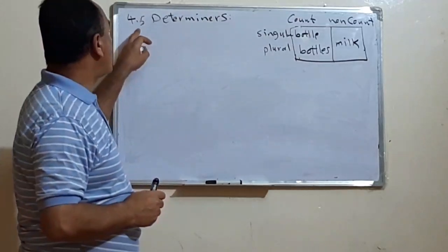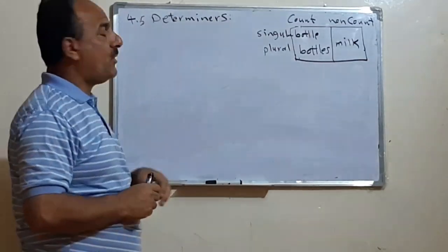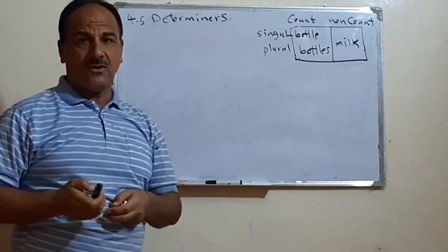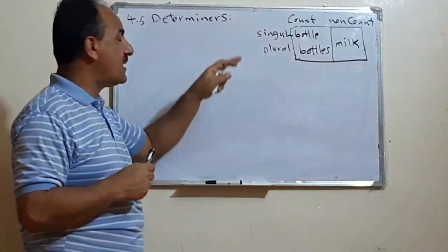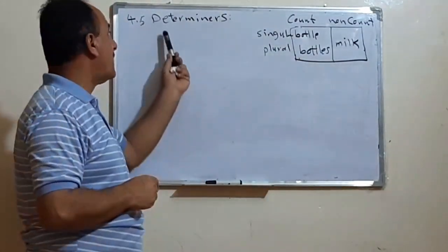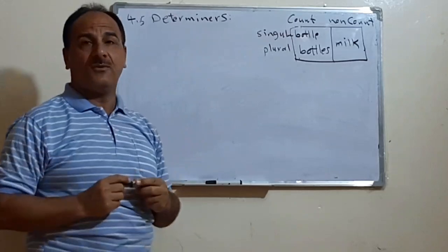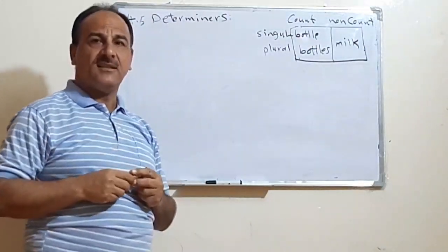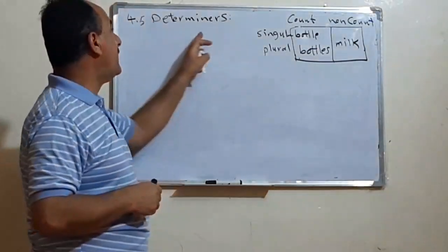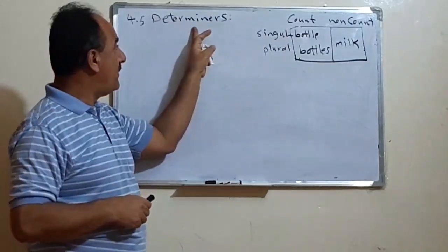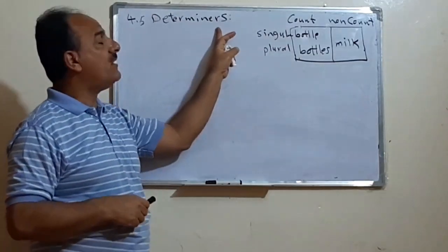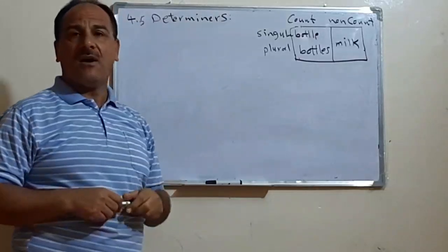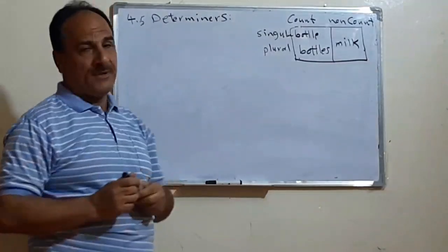In section 4.5, we have what we call the determiners. Some students unfortunately mispronounce it. In fact, it is 'determiner' — from the verb 'determine', the noun 'determiner', and in the plural, we have 'determiners'.